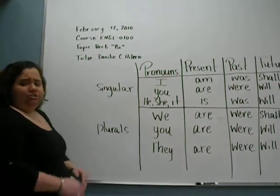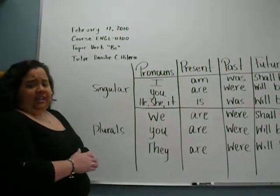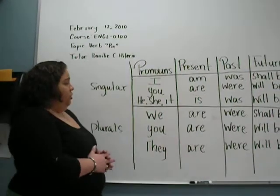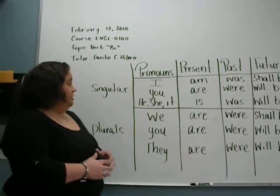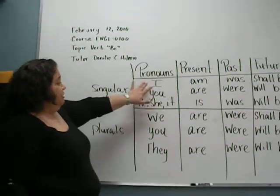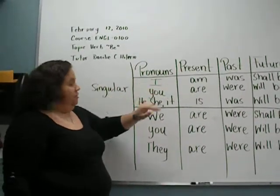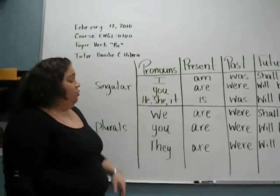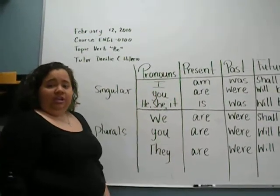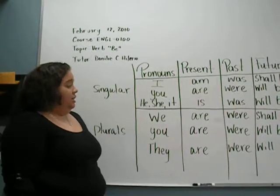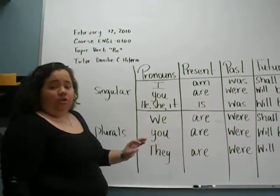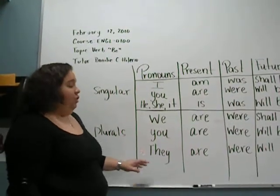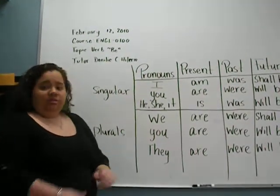We're going to move now to the past tense. When we are speaking about the past tense, we say: I was, you were, he, she, it was, we were, you were, and they were.